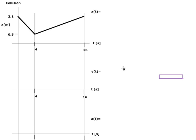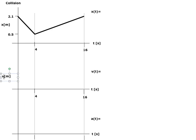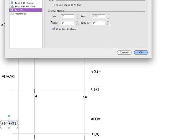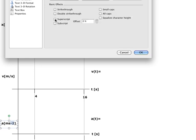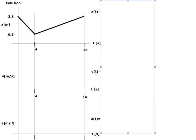For the post lab you have to create three different graphs and label the axis for each. This is x for position, v for velocity, and a for acceleration. So we have x in meters, velocity in meters per second, and acceleration in meters per second squared.